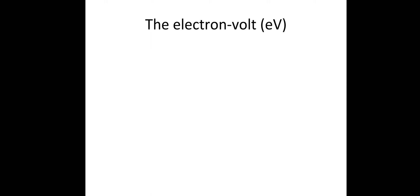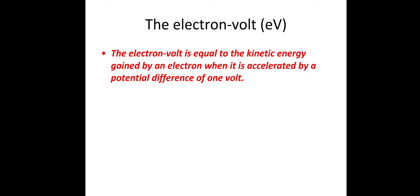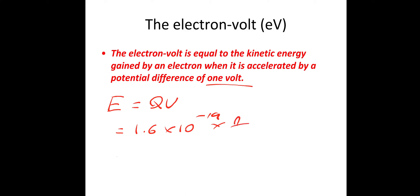So the electron volt — a very important concept for A-level physics. The electron volt is equal to the kinetic energy gained by an electron when it is accelerated by a potential difference of one volt. Energy gain equals charge times potential difference, so the charge of an electron, 1.6×10⁻¹⁹ coulombs, multiplied by one volt, gives us 1.6×10⁻¹⁹ joules — that is one electron volt (1 eV). Exam questions like to give quantities in electron volts to convert to joules, or vice versa.